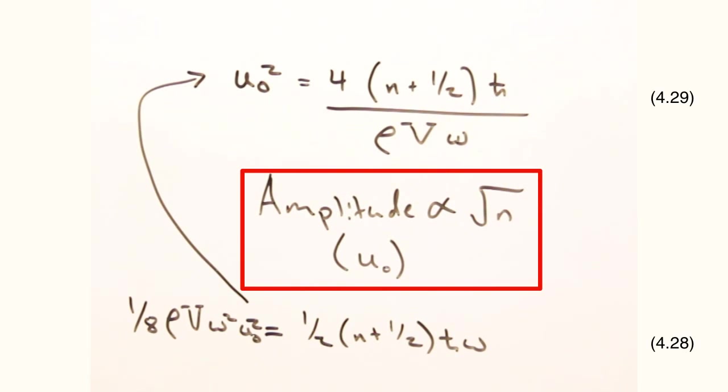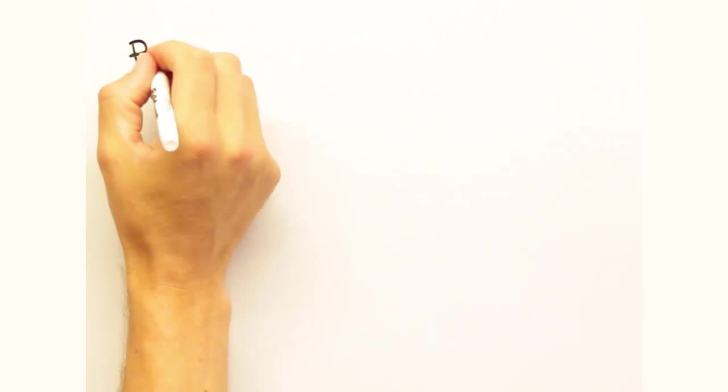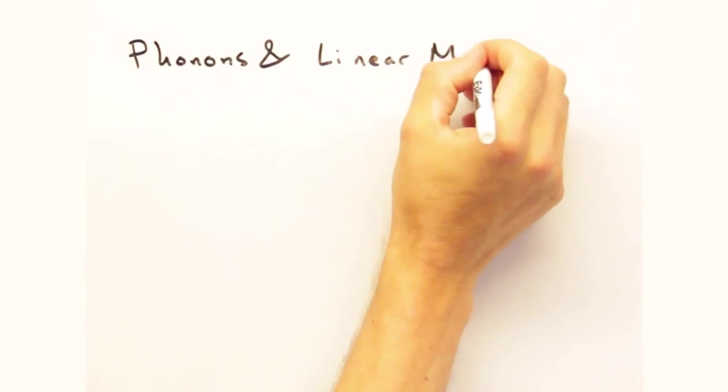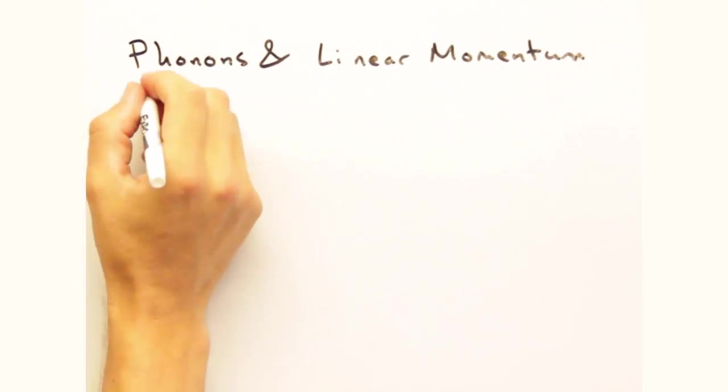Cool. So more phonons of a particular q means that mode has greater amplitude. This brings us to part two of this screencast, looking at how phonons carry no linear momentum. None?